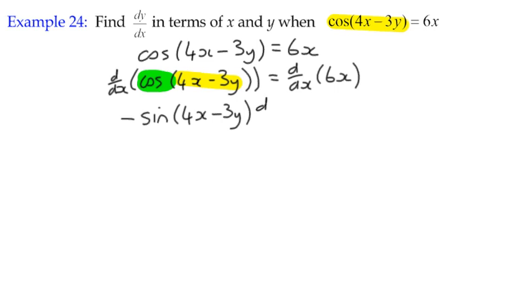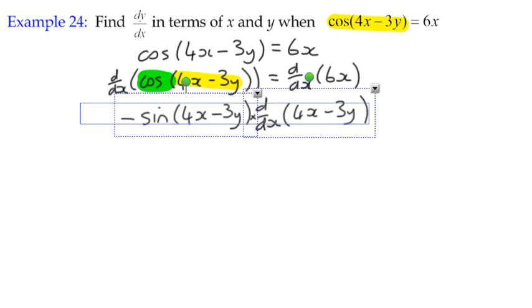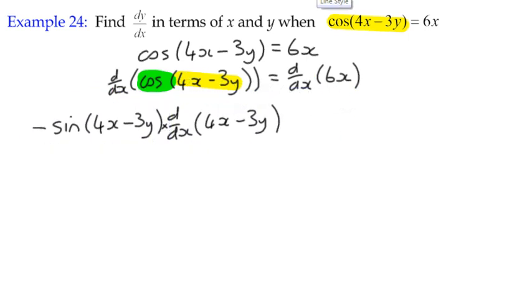And as always with the chain rule, we have to multiply by the derivative of the inside function, which is this here. So I haven't done the differentiation yet. I've just written it out because you'll notice that we have an implicit function. And that's just going to take a little bit of thinking out. So I'm not going to do it just yet. On the other side, I've got the derivative of 6x, which is 6.